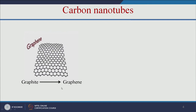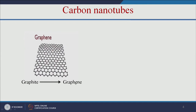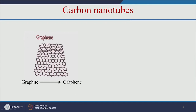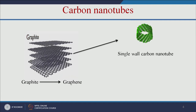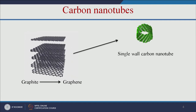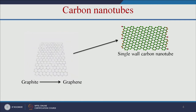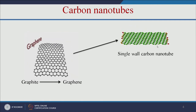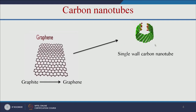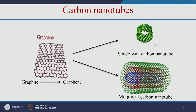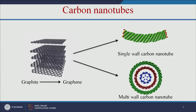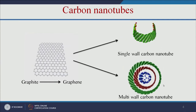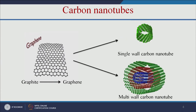We get graphene from graphite. A single layer of graphene, if rolled into tubular form, is called a single-walled carbon nanotube. If you use multiple layers of graphene, that is called multi-walled carbon nanotubes.